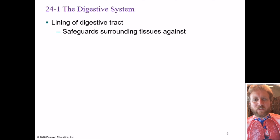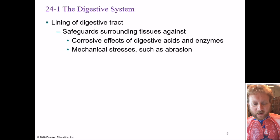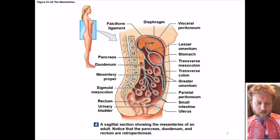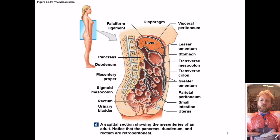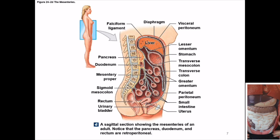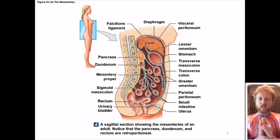When we talk about the lining of the digestive tract, the lining protects the surrounding tissues against a lot of things: corrosive acids and enzymes, mechanical stresses, and bacteria that we're taking in or that are residing in your digestive tract. All of these organs are in your abdominal cavity, sitting below your lungs and going down into the pelvic region. Holding all of this stuff together is something called the peritoneum.